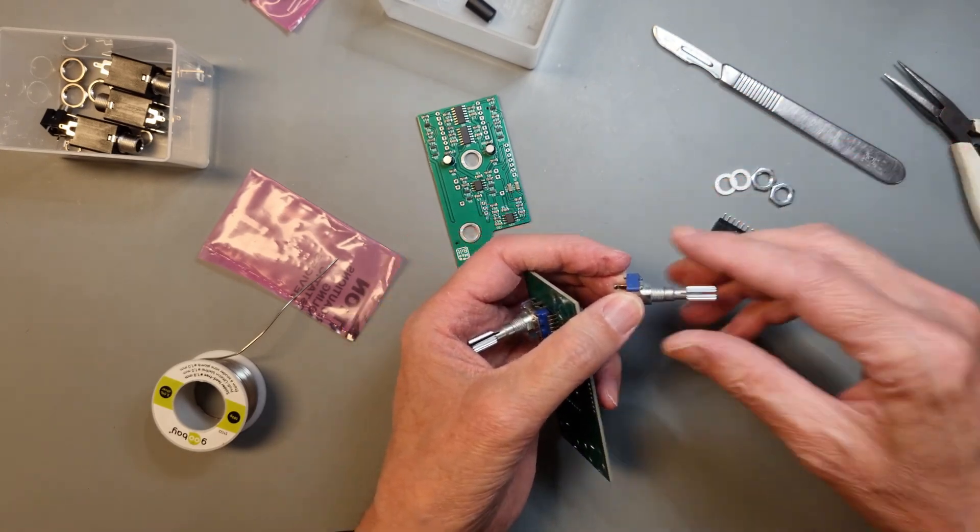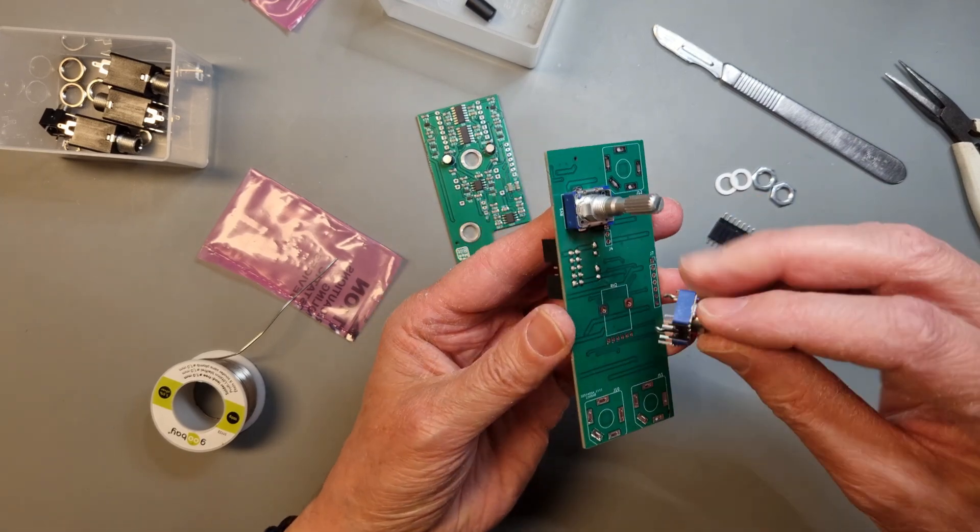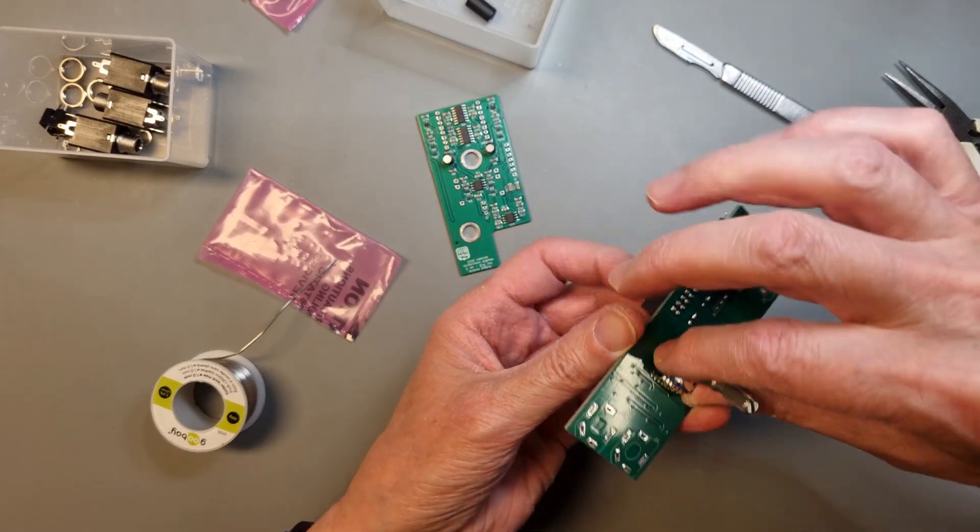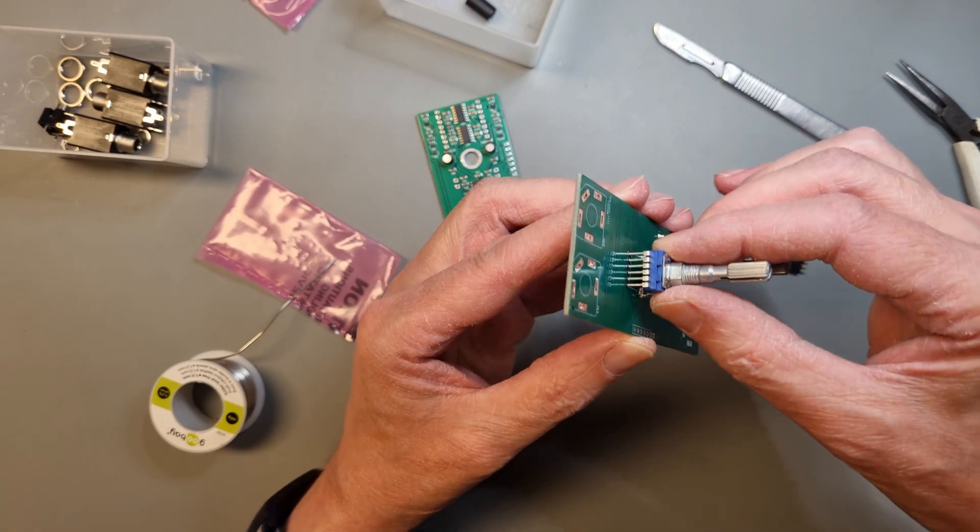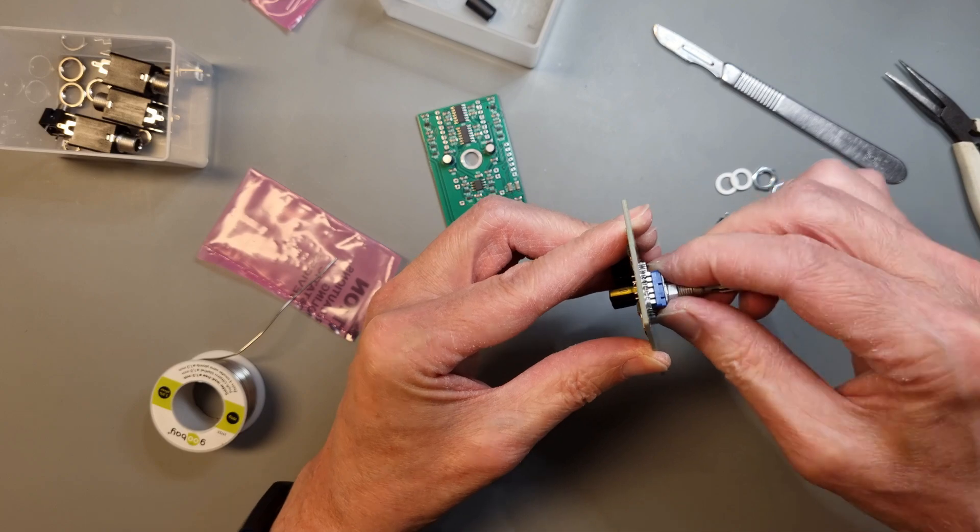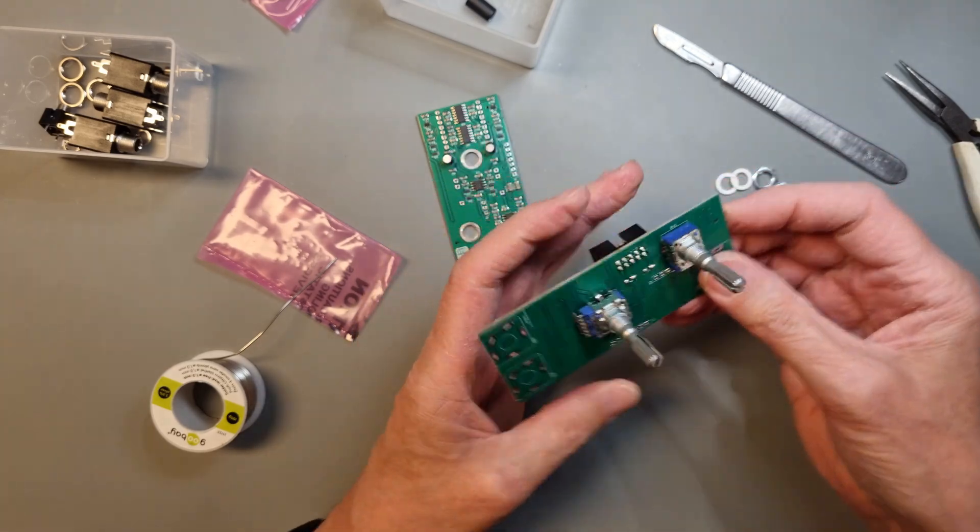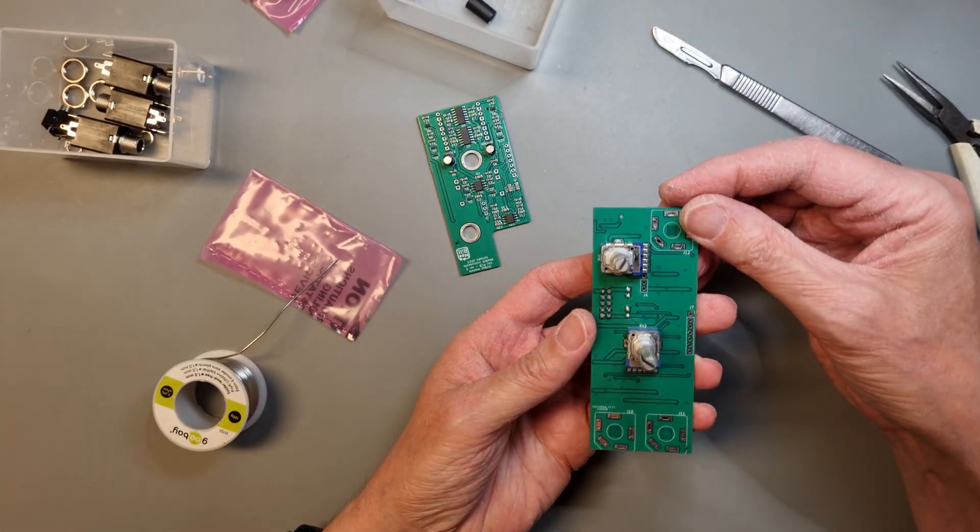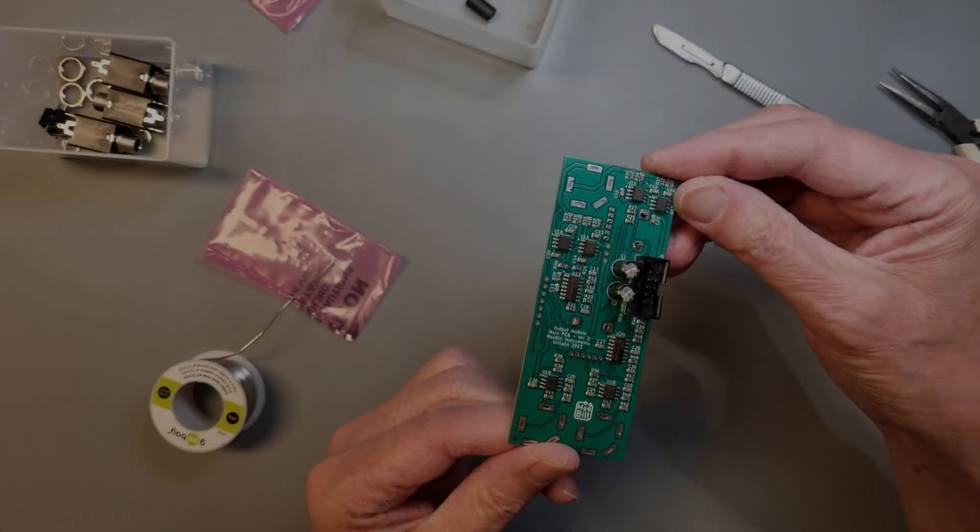It can be a bit tricky to align the legs, but just be careful so you don't bend them. Double check that the pots are in the right position and solder the legs.